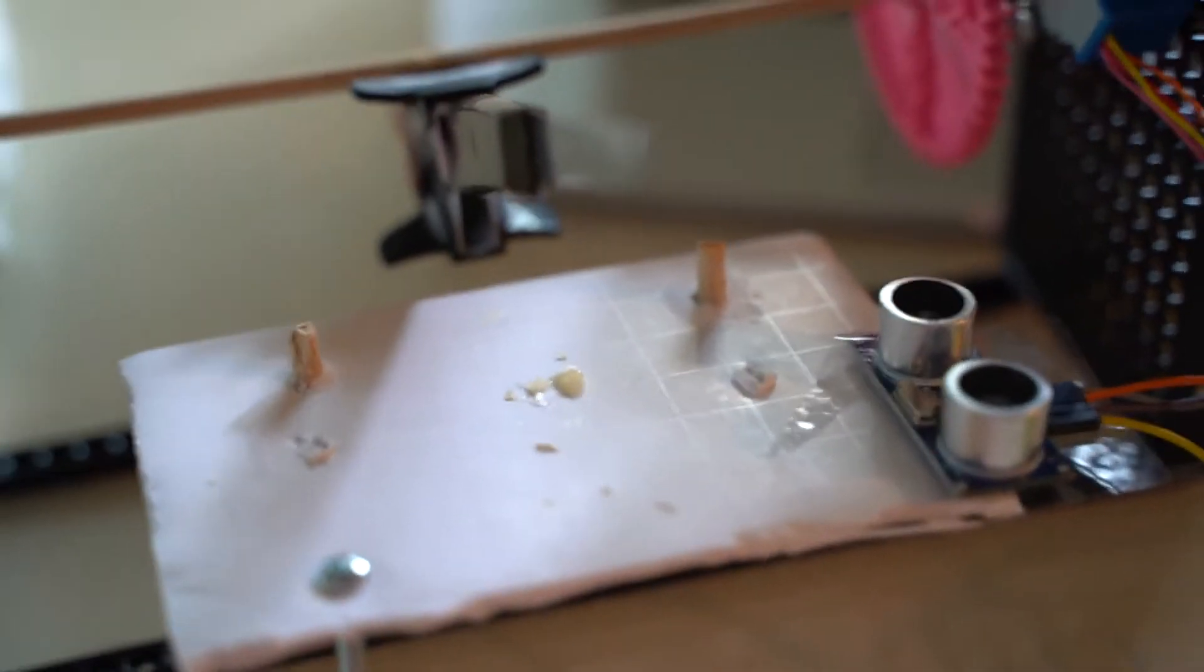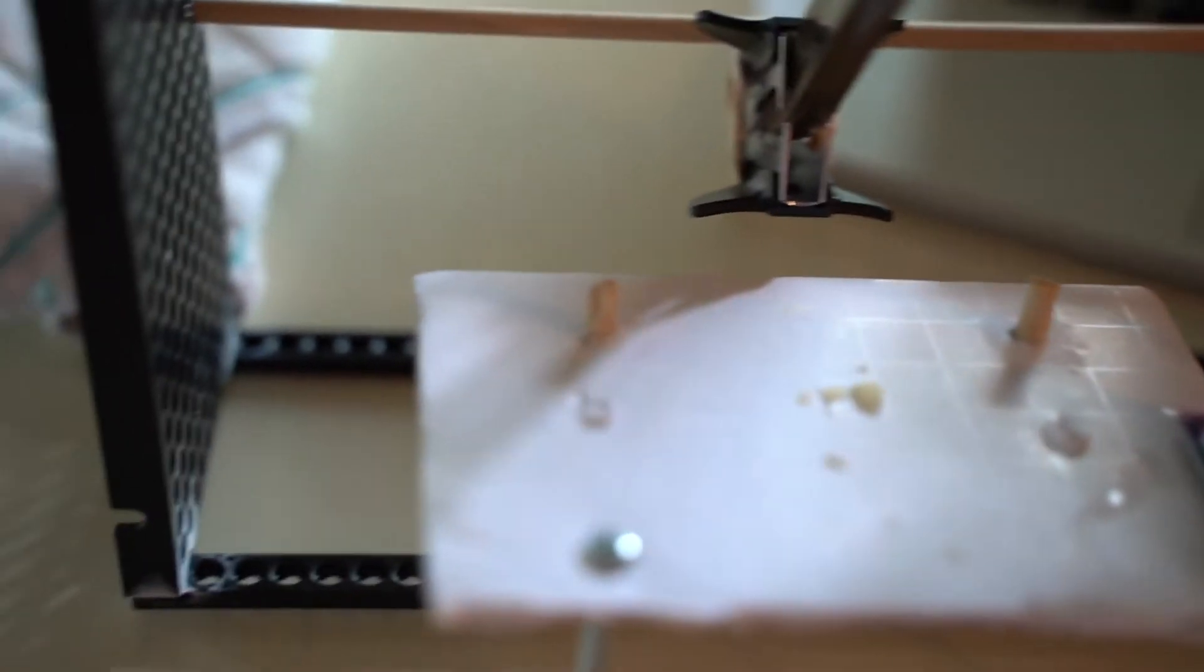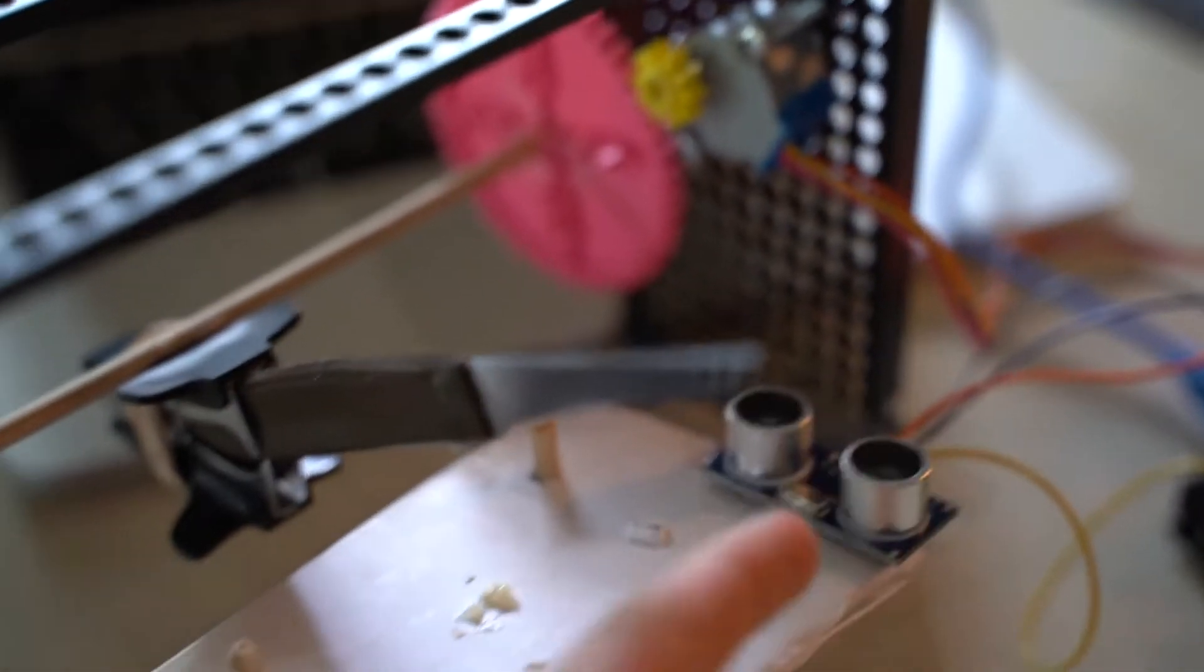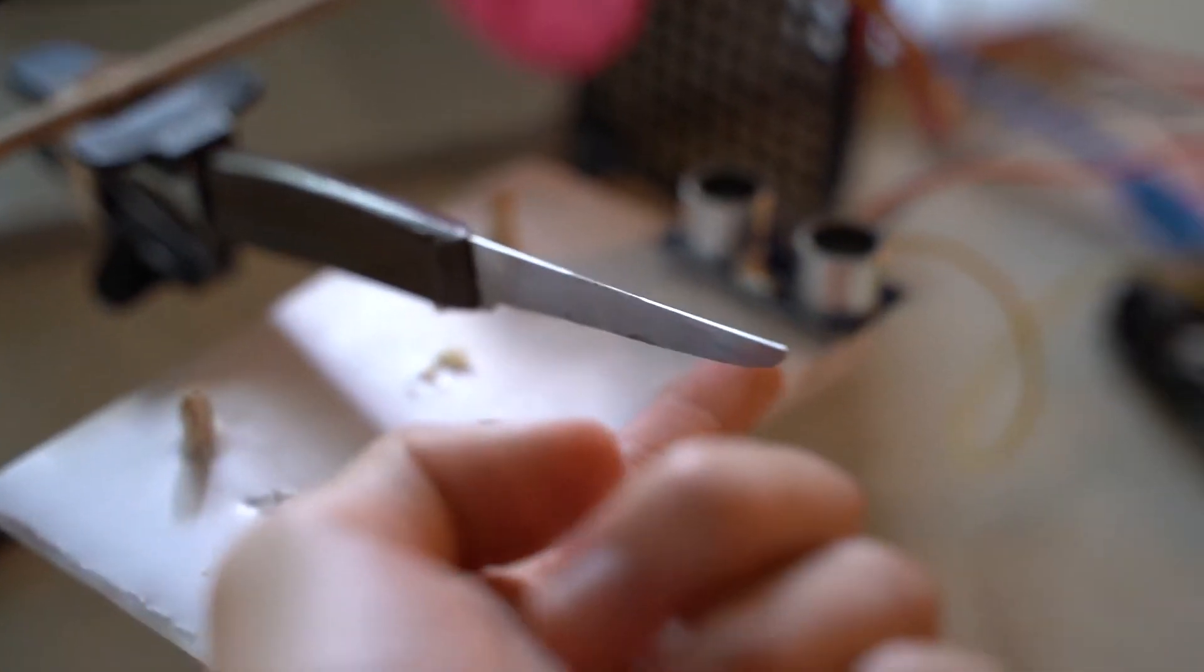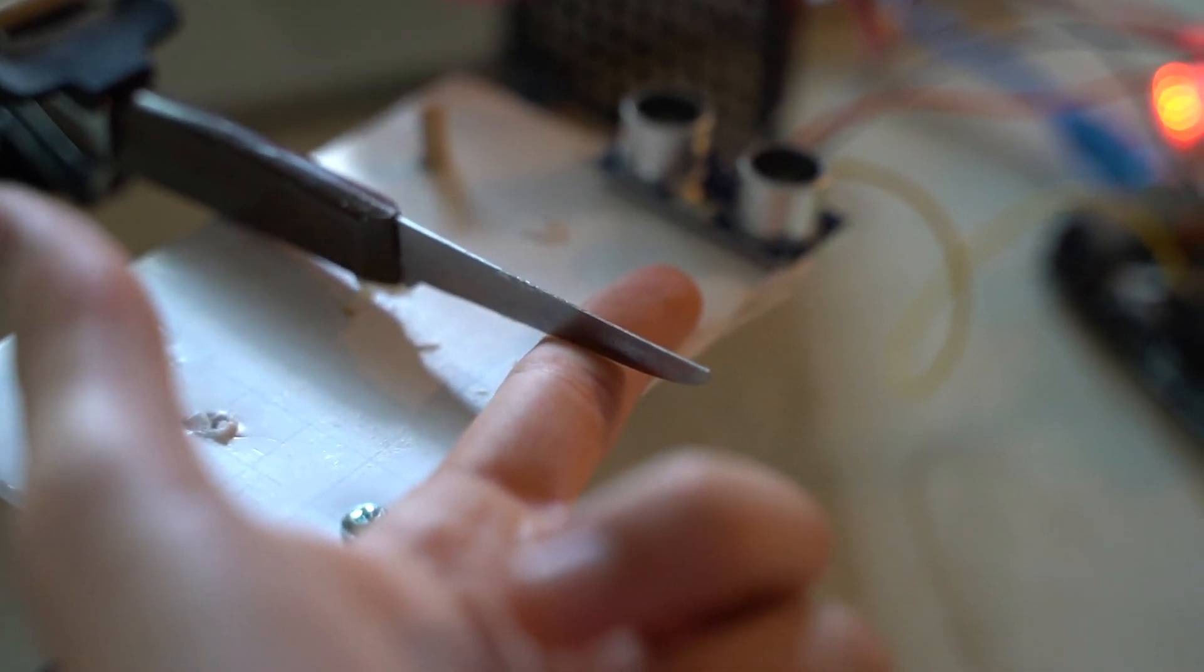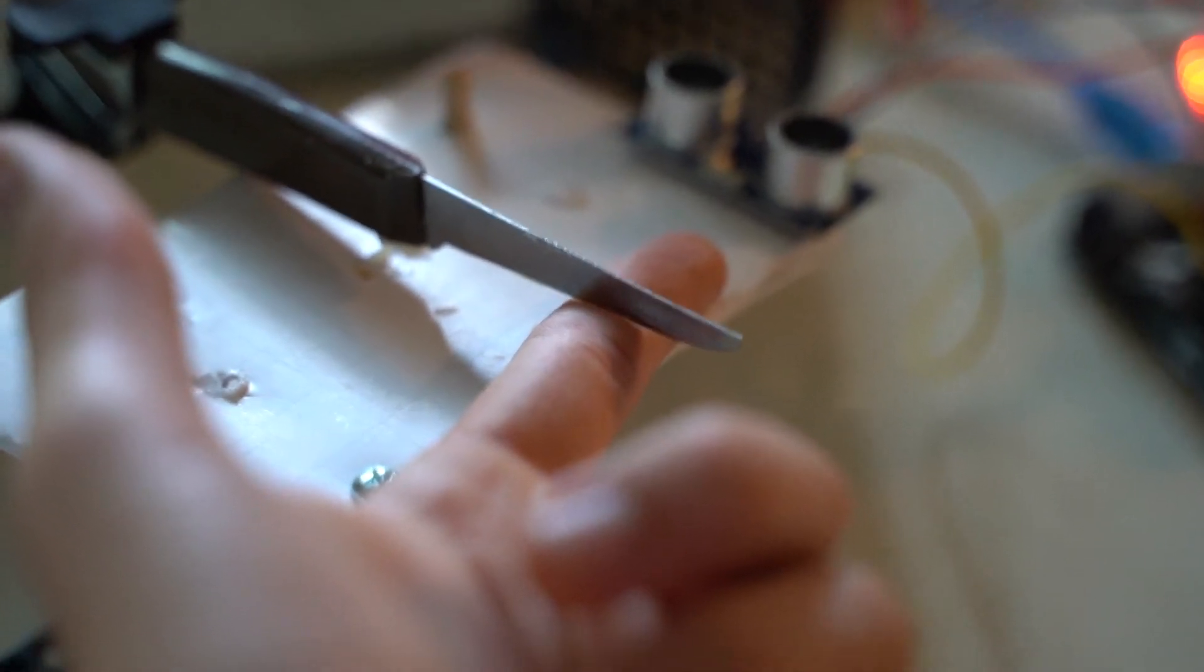Now it is safe if your hand gets stuck underneath, which I will demonstrate here. So I will now put my hand underneath the knife, and you'll notice that it doesn't chop very hard, which makes it safe.